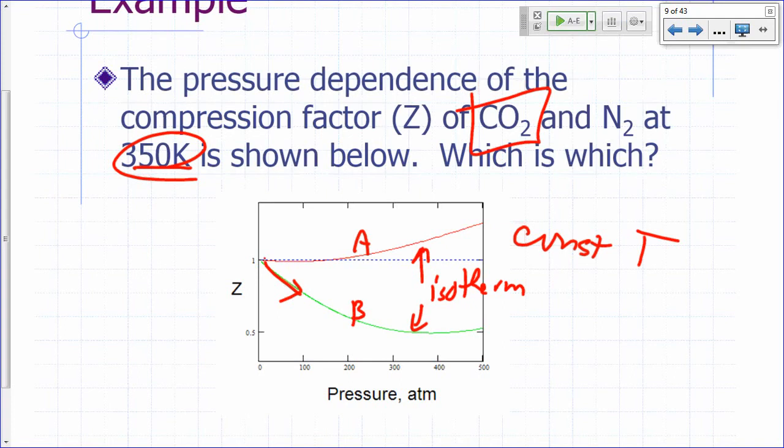Attractive forces. You're looking at conditions where attractive forces are significant so that the gas occupies a smaller volume than it would if it were ideal, right? When Z equals 1 right here, that's the ideal case. So, why do you expect carbon dioxide to dip below 1 better than nitrogen at the same temperature?